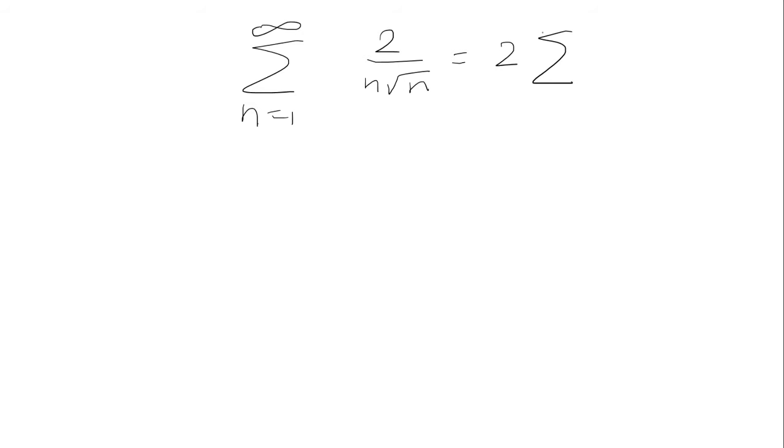I can factor out the 2 and rewrite the denominator as 1 over n to the 3 halves. Here the exponent is 3 halves so we can think of this as a p series with p being three halves and because this is greater than 1 it's going to converge. If it was less than or equal to 1 it would diverge.